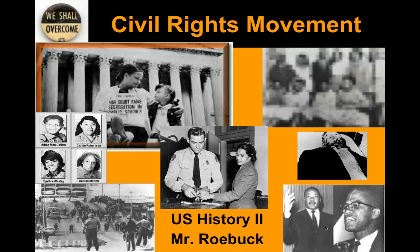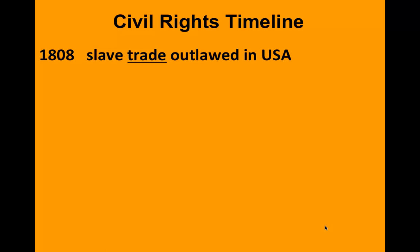We'll take a look at the history of civil rights. We know our country — African Americans arrived here for the most part during the slave trade, dating back to the 1600s to the 1800s when it was outlawed, but by no way, shape, or form did the slave trade actually stop. Slaves were still being brought into the country, still being bought and sold.